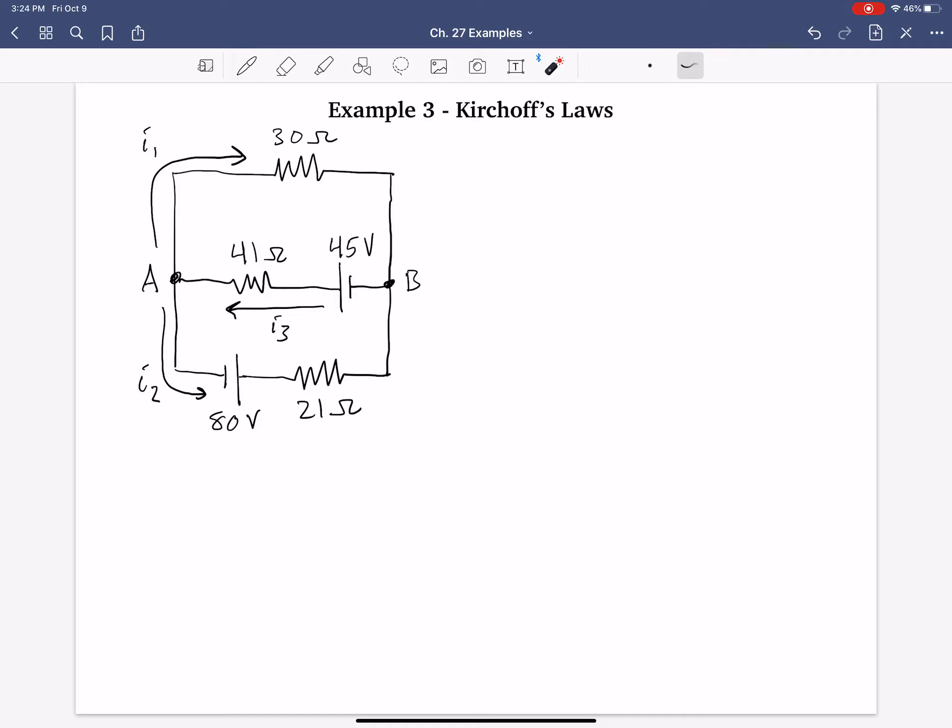One is from A down, around, up to B, and through the middle. That's one. Two is A up and around, down to B, and through the middle. And then the third is around the outside. Those are three separate distinct current loops.